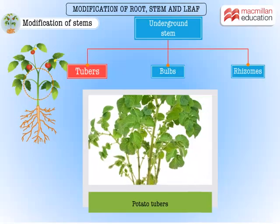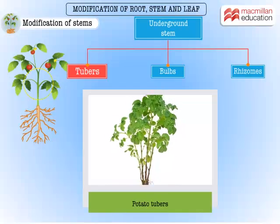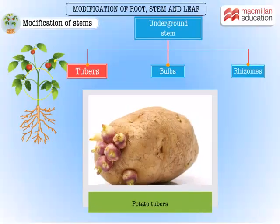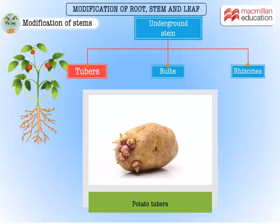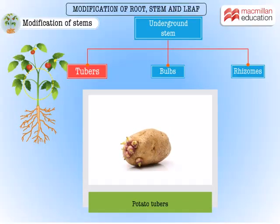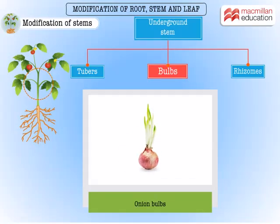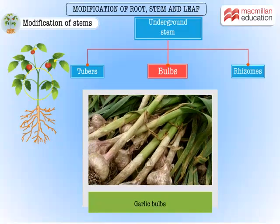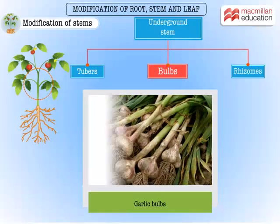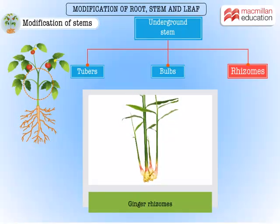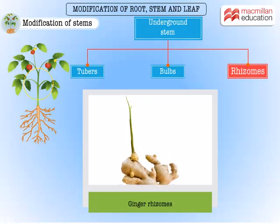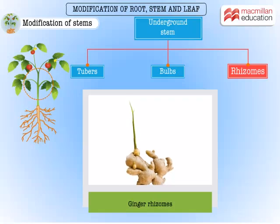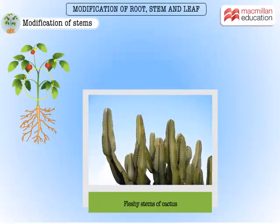Tubers are stems that are roughly spherical in shape and may have buds or eyes on them that can develop into new plants. Bulbs are conical stems that are fleshy and consist of fibrous roots. Rhizomes grow horizontally under the soil and have scaly leaves which are often brown in color.